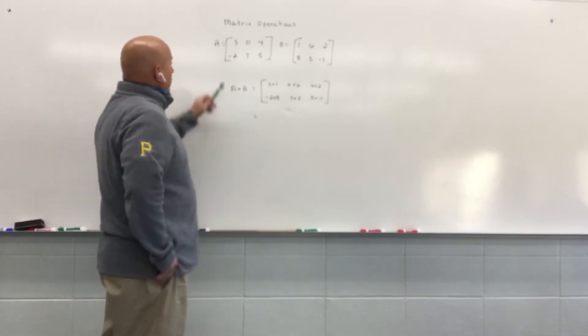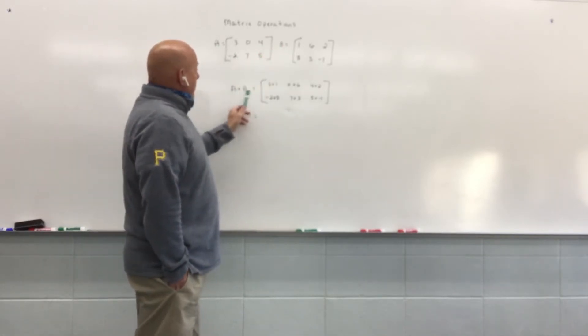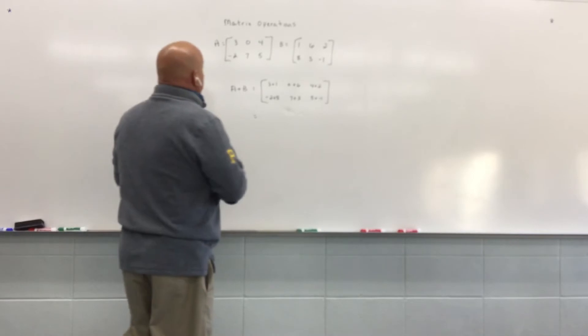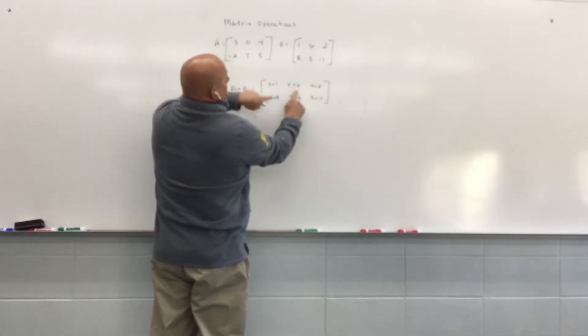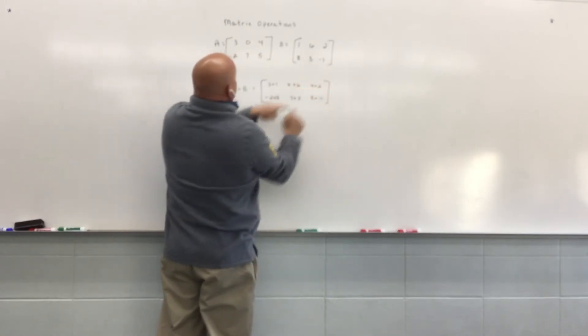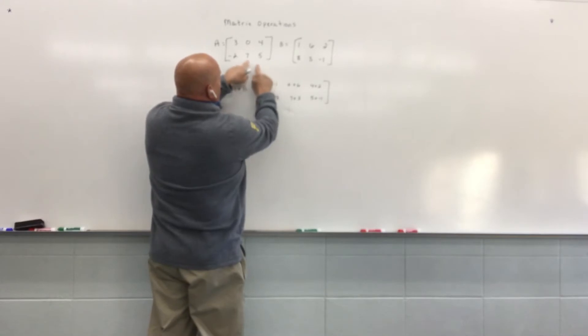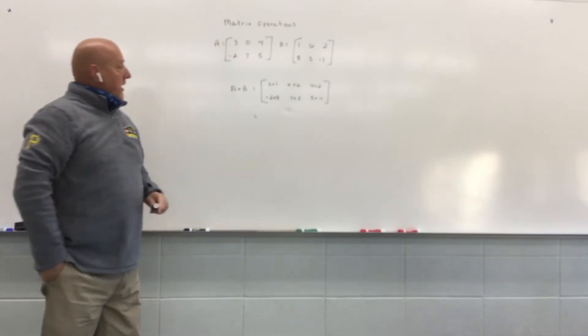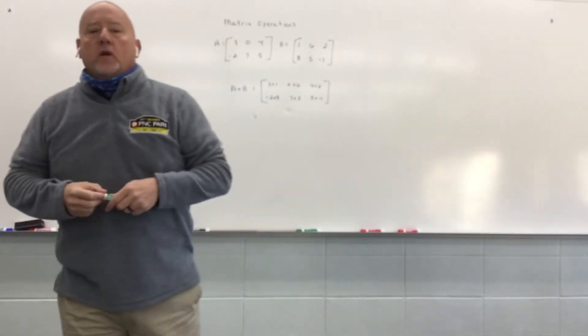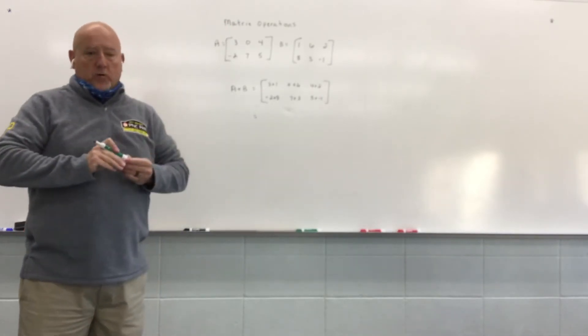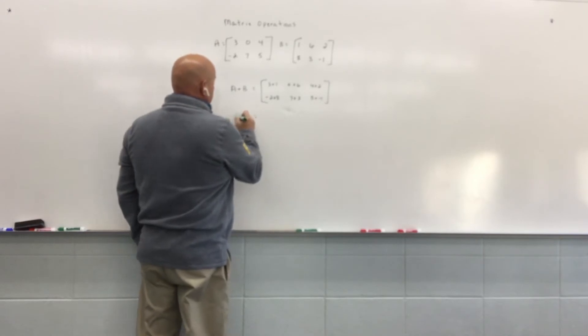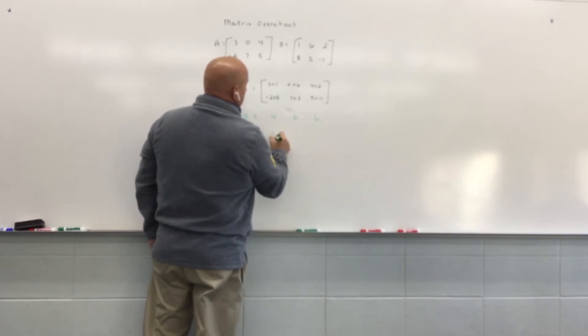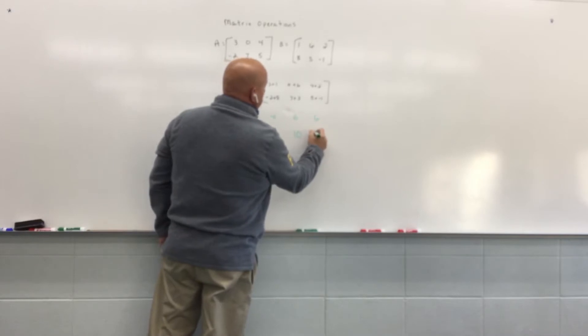So we can add matrix A plus B by simply adding the values that are in the same position. So A plus B is going to be 3 plus 1, 0 plus 6, 4 plus 2, negative 2 plus 8, 7 plus 3, and 5 plus negative 1. So once that happens, really what it comes down to is just really being careful of your integer work with your adding and subtracting. So matrix A plus B would have the values 4, 6, 6, 6, 10, and 4.